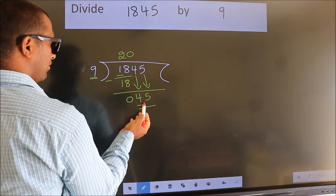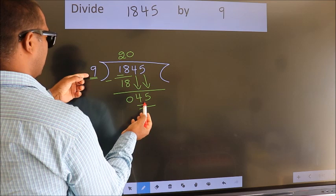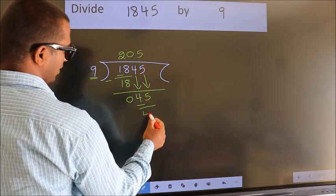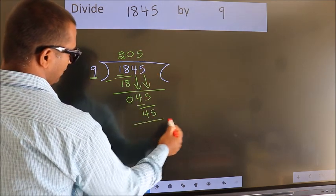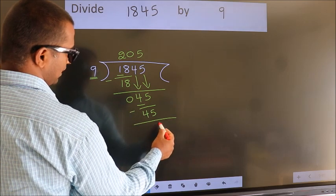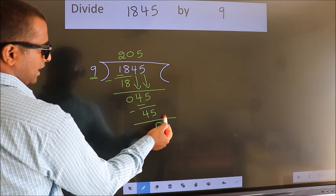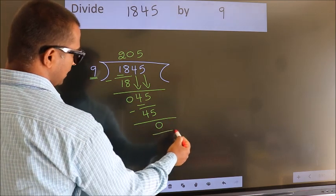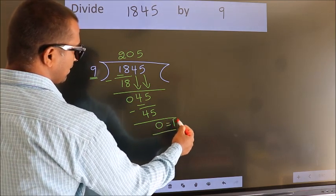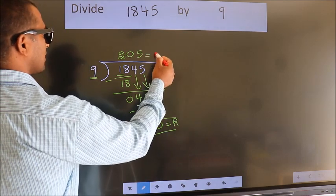When do we get 45? In 9 table. 9 5s 45. Now we subtract. We get 0. No more numbers to bring it down. So we stop here. This is our remainder. This is our quotient.